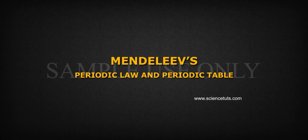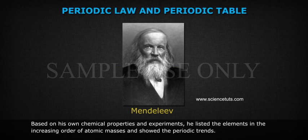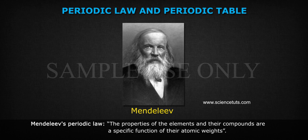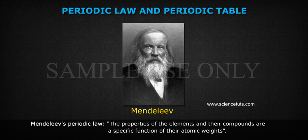Mendeleev's Periodic Law and Periodic Table. Based on his own chemical properties and experiments, he listed the elements in the increasing order of atomic masses and showed the periodic trends. Mendeleev's Periodic Law states that the properties of the elements and their compounds are a specific function of their atomic weights.